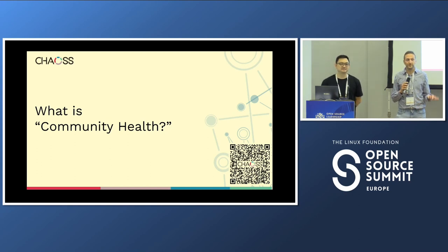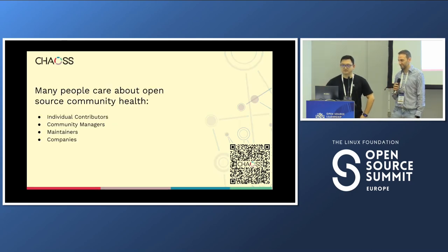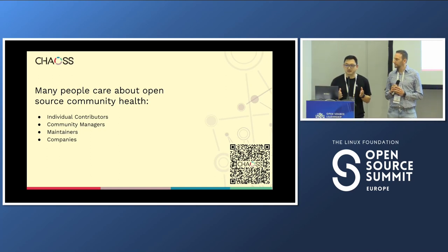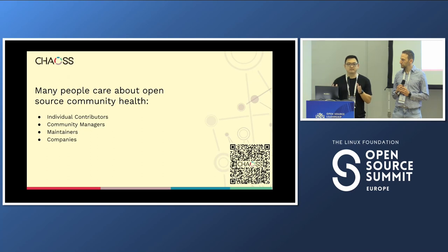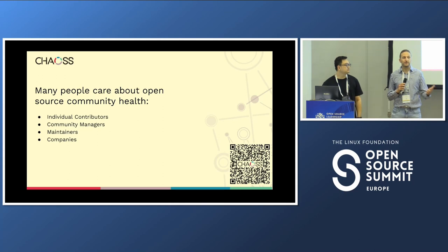What is CHAOSS? The acronym stands for Community Health Analytics for Open Source Software. The first question on the table is: what is community health? Many of our users who care about community health include individual contributors, community managers, maintainers, and companies. We also have many people from universities, like researchers, who care about everything happening in open source. It's also very useful for people who want to invest as a startup company providing back-end support for open source projects.